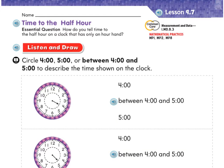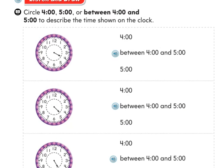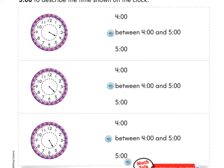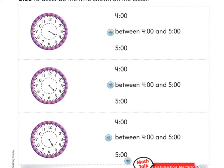Go ahead and make a choice. Then go down to the next one — same thing. Look at the clock, look at where the hour hand is pointing, and make a choice: four o'clock, between four o'clock and five o'clock, or five o'clock. Then do the same down here — make one choice for where the hour hand is pointing.